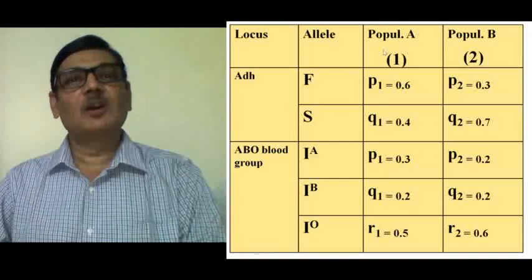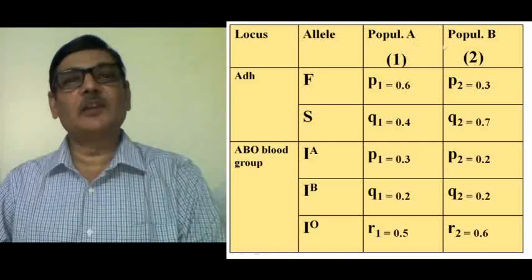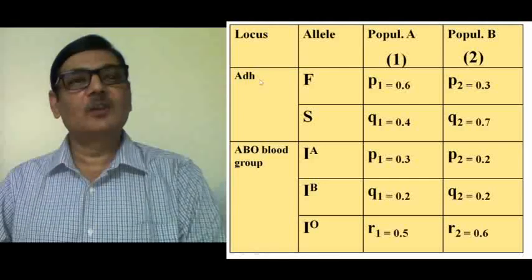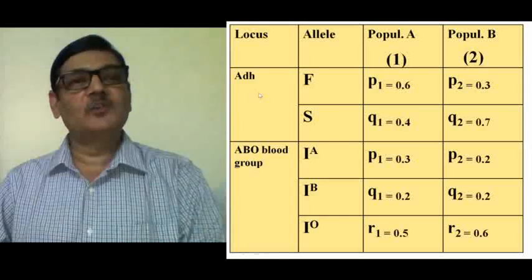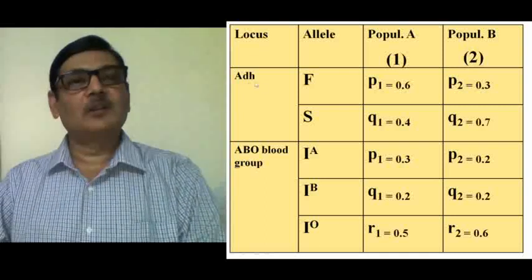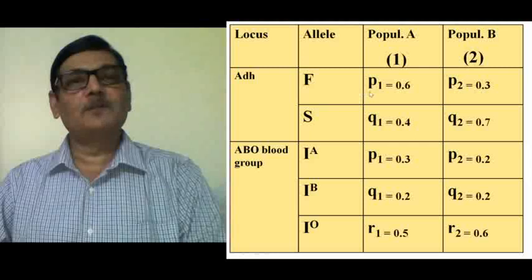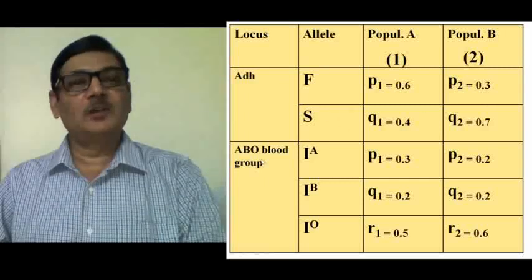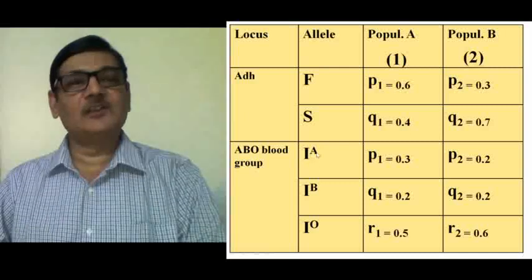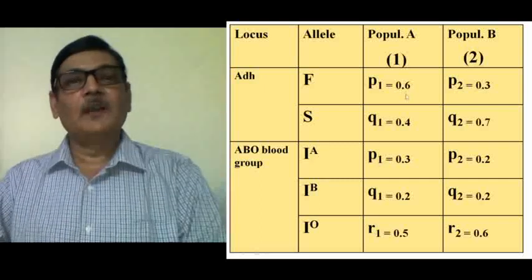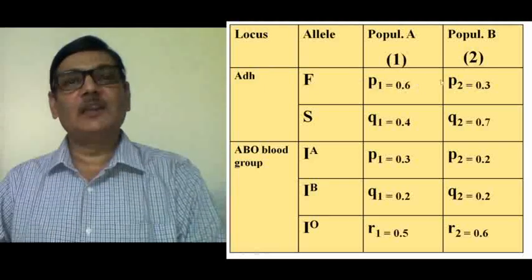We are going to observe genetic identity between two populations, Population 1 and Population 2. Suppose there are two gene loci: one for alcohol dehydrogenase (ADH) and the other for ABO blood group. The ADH locus has fast and slow alleles with frequencies P1, Q1 in Population 1 and P2, Q2 in Population 2. The ABO blood group locus has three alleles — IA, IB, and IO — with frequencies represented as P, Q, and R respectively.